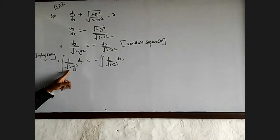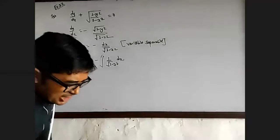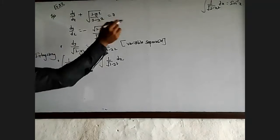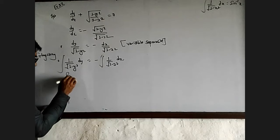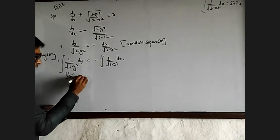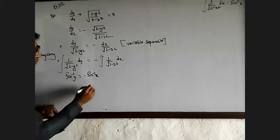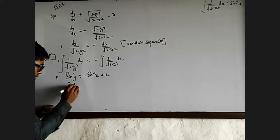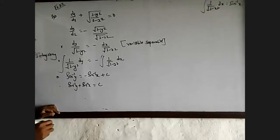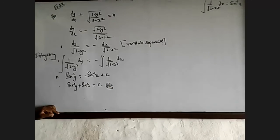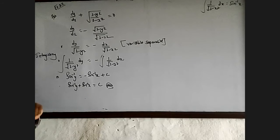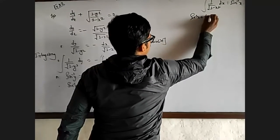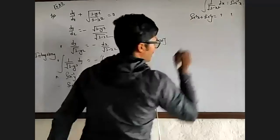This is the inverse formula — sine inverse. So we get sin⁻¹(y) plus sin⁻¹(x). This is the simplest formula: sin⁻¹(x) plus sin⁻¹(y) equals a constant.